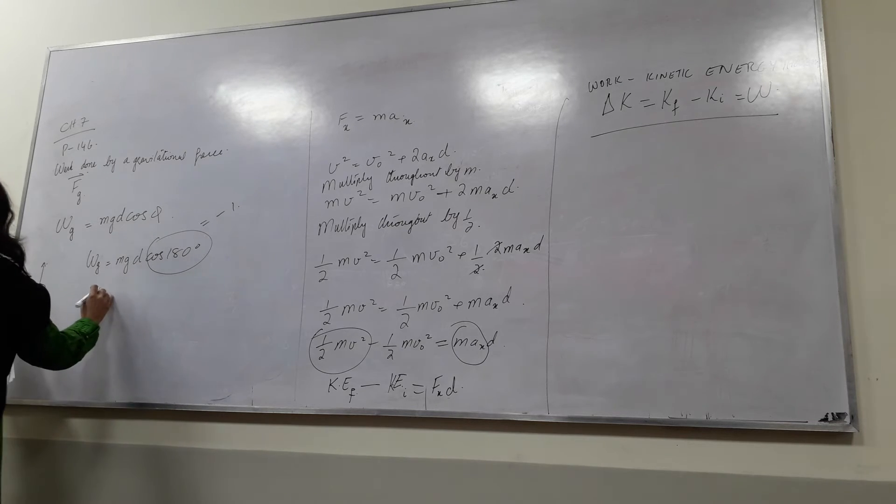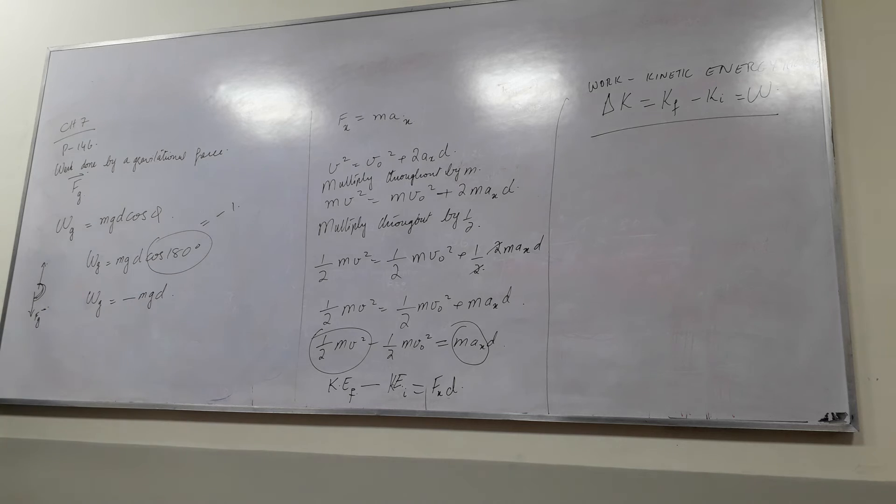So in this case, you can substitute this value and we get Wg is equal to minus mg d. Now you understand why we have a negative sign with it.